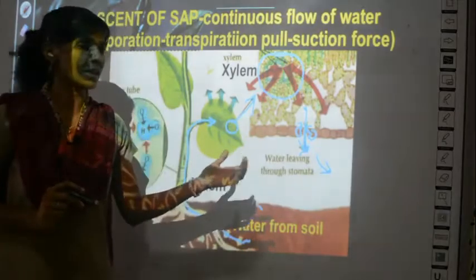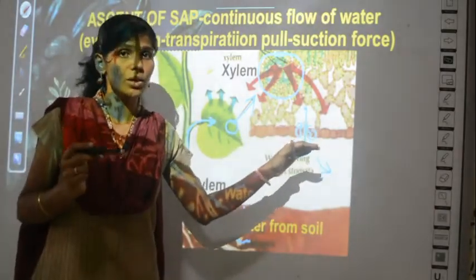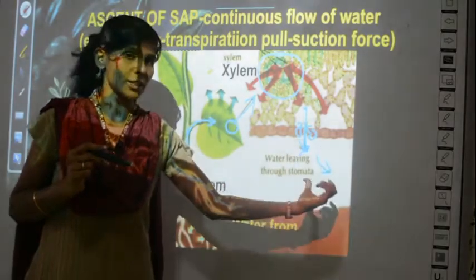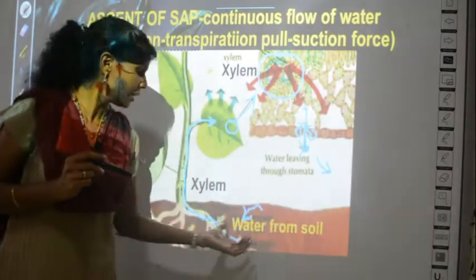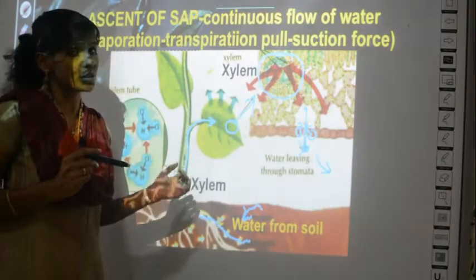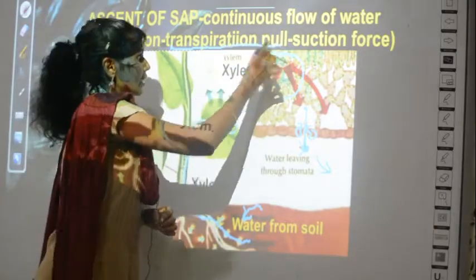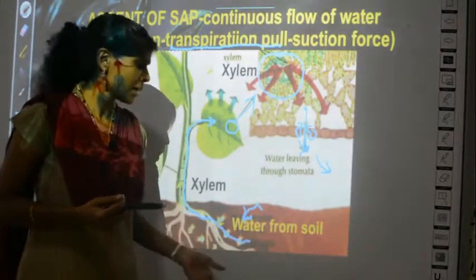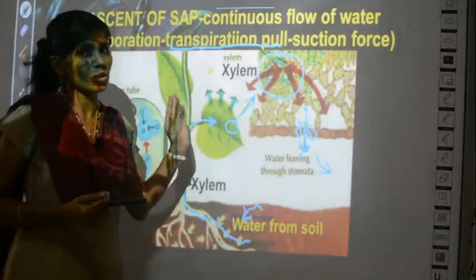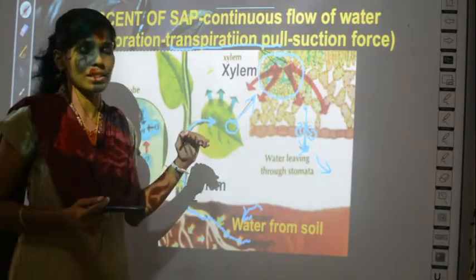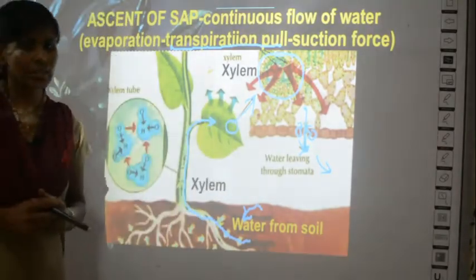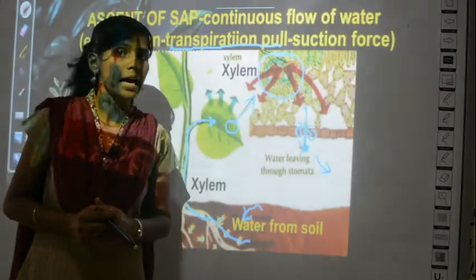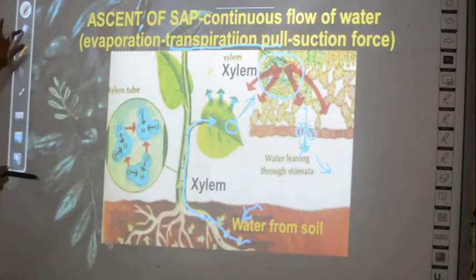When some water is lost, a suction force is created. This water loss through stomata is transpiration. When there is transpiration, a suction force called transpiration pull is created, which pulls the remaining water from the soil, keeping the flow continuous. Because it flows in the upward direction, it is called ascent of sap — this is the first use of transpiration.